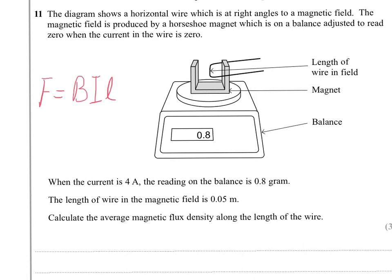Okay, so this is basic use of F equals BIL. There's no need for an angle to be put in because the wire is running through the magnetic field at right angles. The magnetic field will run between the poles of the horseshoe magnet and therefore it's cutting across that wire at 90 degrees.